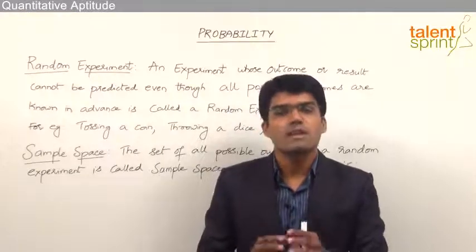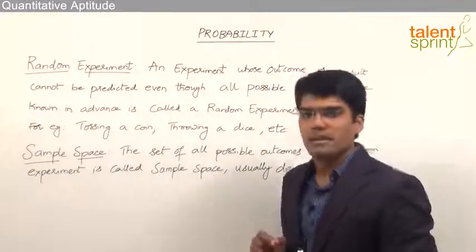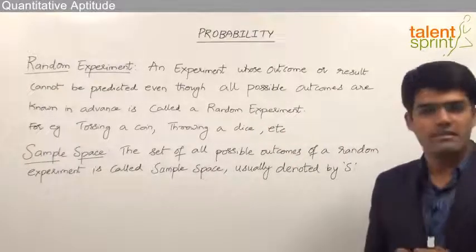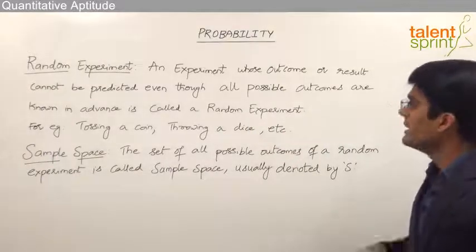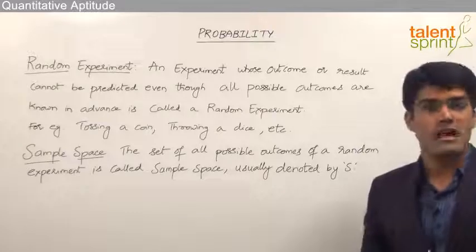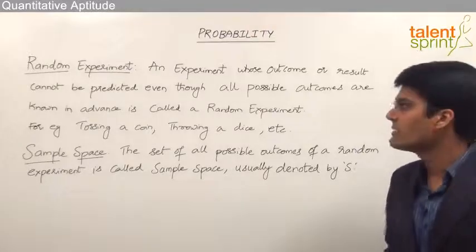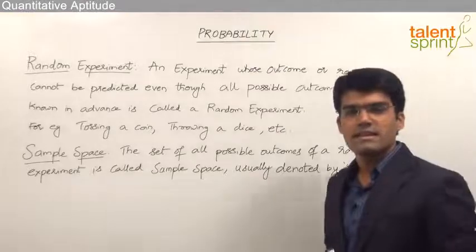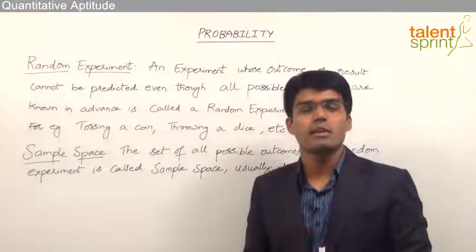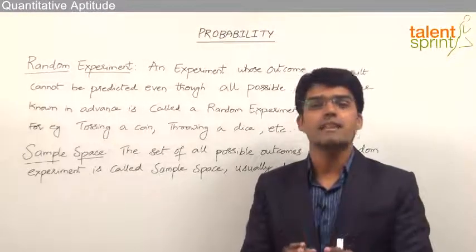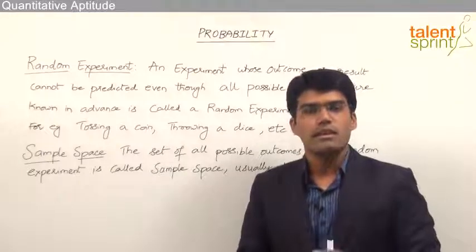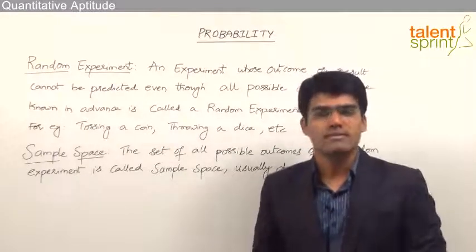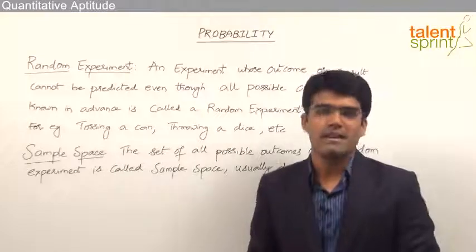Let us now see what is meant by a random experiment. A random experiment is an experiment whose outcome or result cannot be predicted even though all the possible outcomes are known in advance. So the outcome or the result cannot be predicted even though all the possible outcomes are already known to us. Such an experiment is called a random experiment.